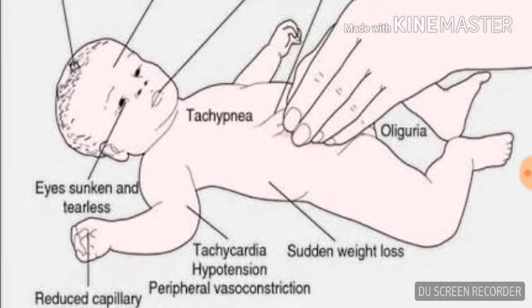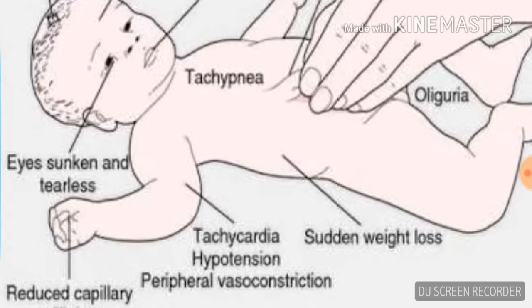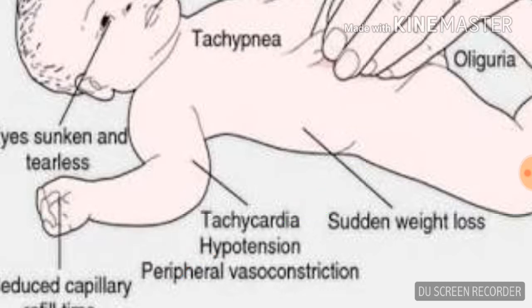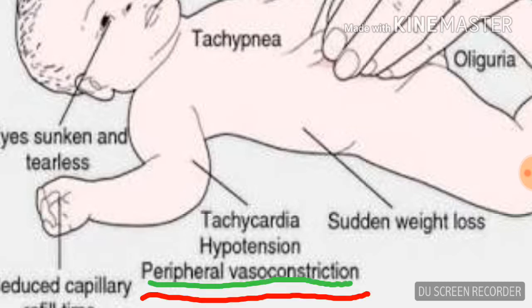The eyes will be sunken in moderate dehydration. In mild dehydration, vitals are not generally altered, but once the dehydration is moderate there can be tachycardia, and once it becomes severe there can be hypotension. Due to peripheral vasoconstriction, the skin can be cool and clammy in case of moderate to severe dehydration.